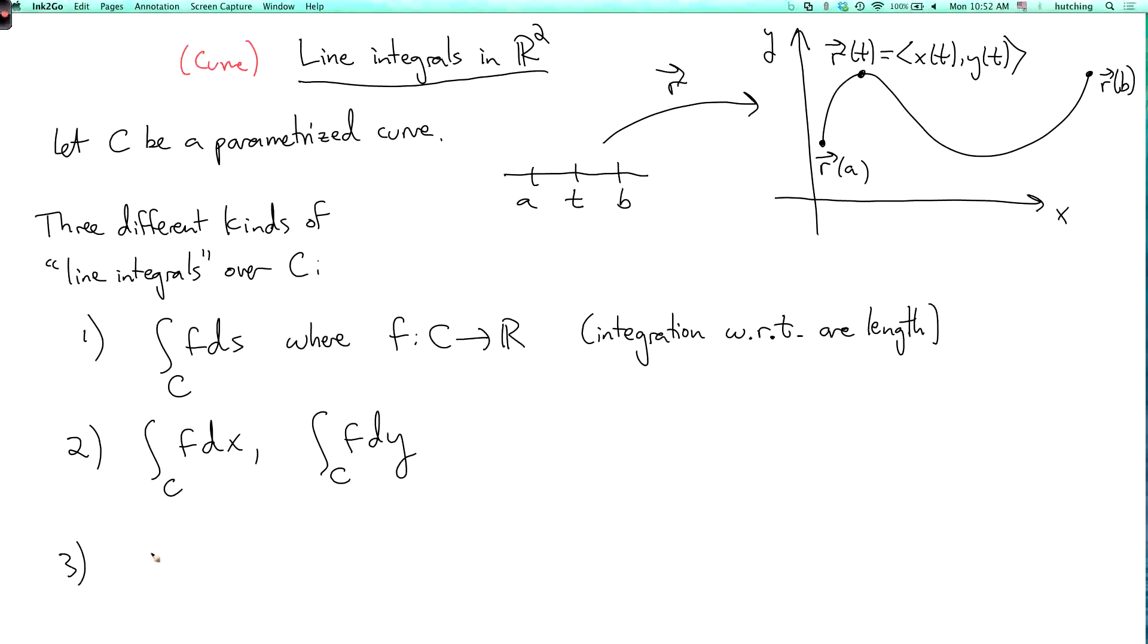And the third is you can have integral over c of f dot dr where f is a vector field. And these three integrals are quite different objects. They have different properties, different definitions, and different purposes.